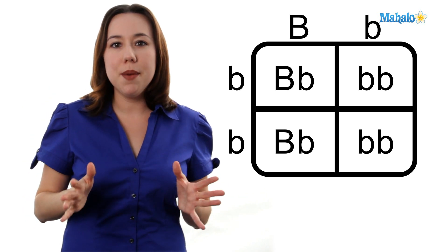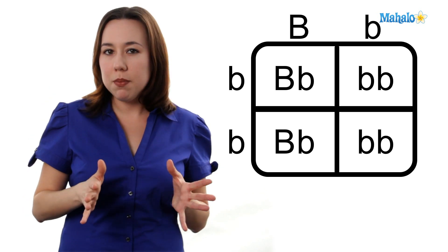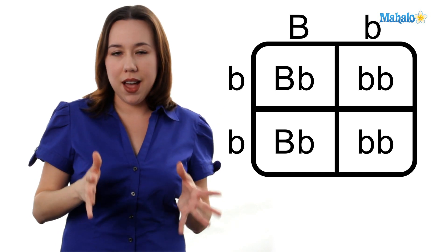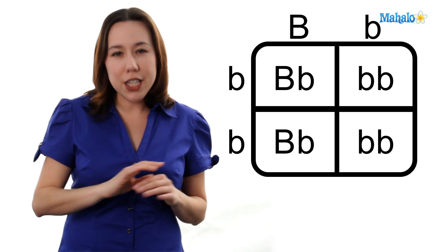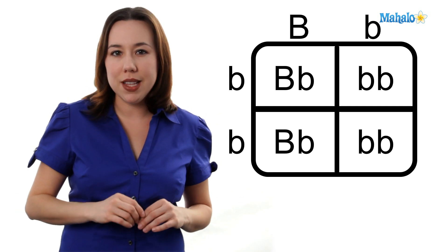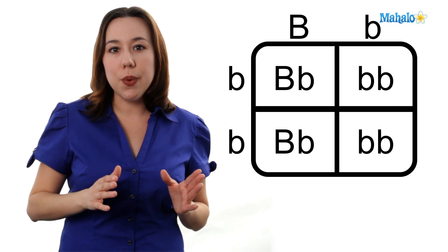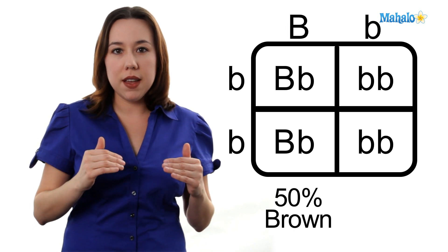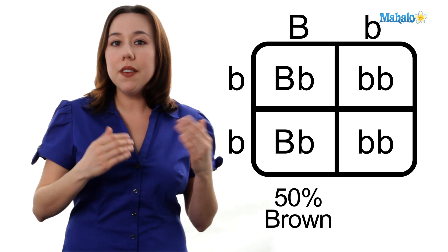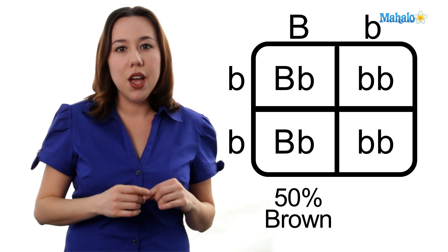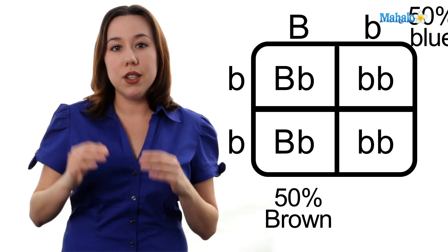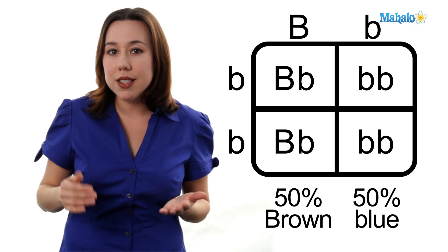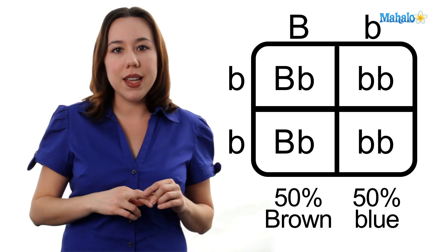Okay, what does that mean for the probability of getting an offspring with what kind of eye color? Remember, each of those squares is going to be 25 percent. So, we have a 25 plus 25, or 50 percent chance of getting an offspring with brown eyes. And we have a 25 plus 25, or 50 percent chance of getting an offspring with blue eyes.